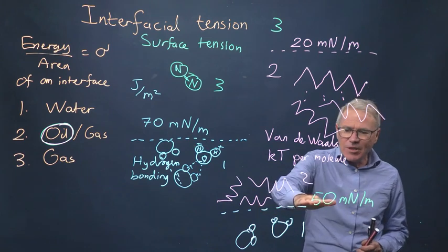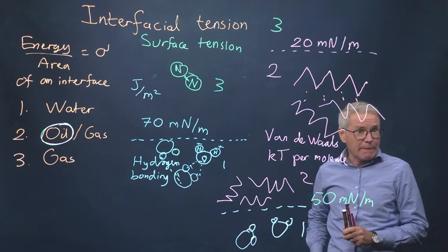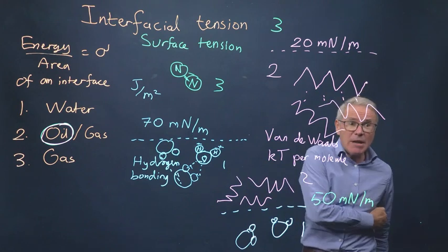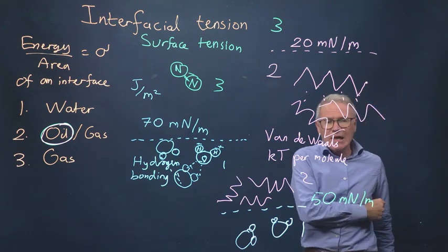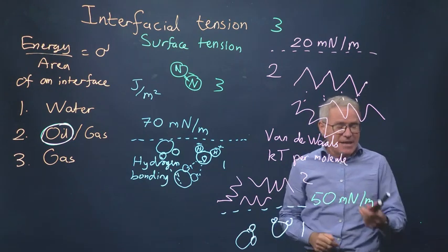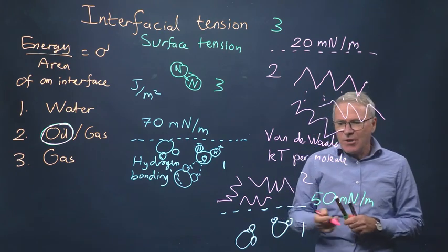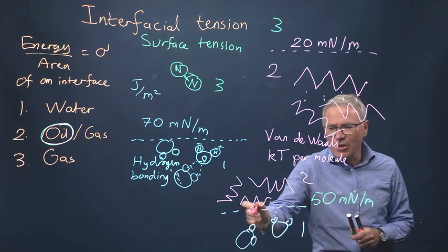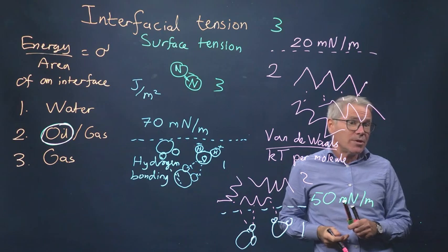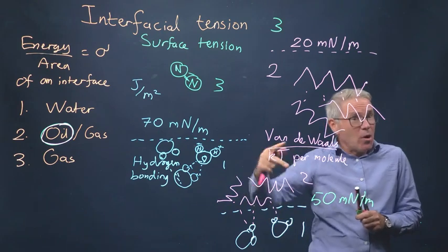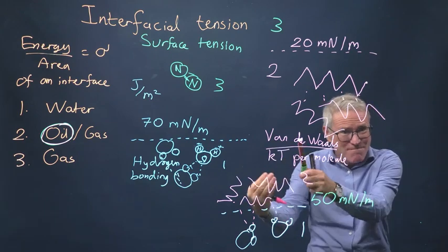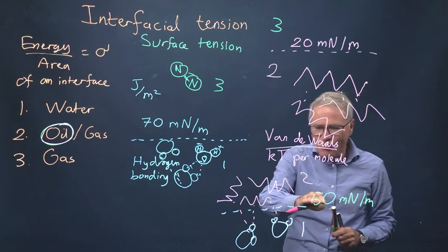Well, let's consider this oil-water interface. When you've done this, you've broken the hydrogen bonding for the water. So there's an energy penalty of 70 millinewtons per meter. But now you've got two dense phases next to each other. And although the water can't interact with the oil with hydrogen bonding, there's still van der Waals forces. And that's a positive in the sense of a lower energy contribution, in the sense that it makes it favourable.